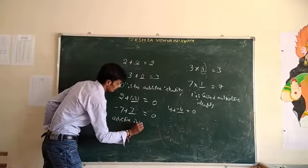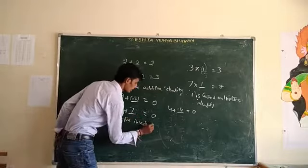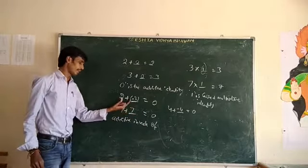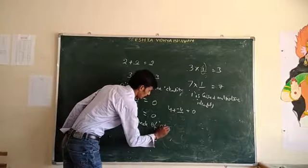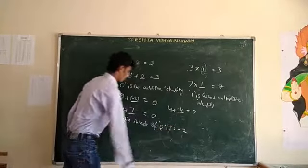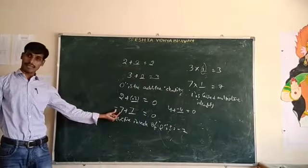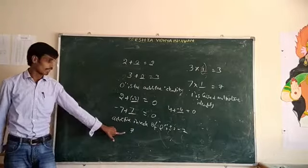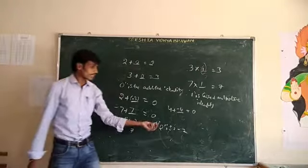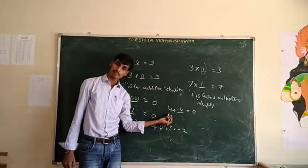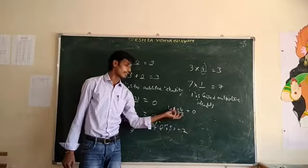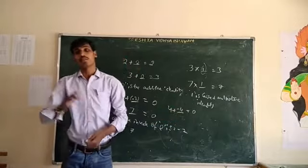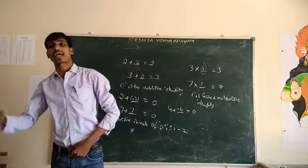The additive inverse of 2 is minus 2. The additive inverse of minus 7 is 7. The additive inverse of 4 is minus 4, because the sum of the two numbers gives the result as 0.